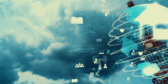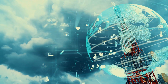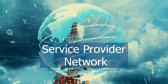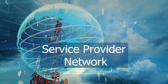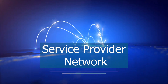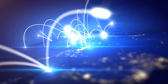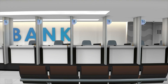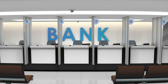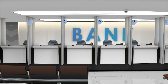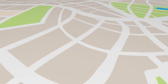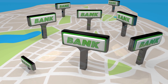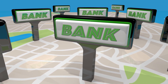An internet provider network, on the other hand, is a very large network. It's also called a service provider network. In addition to providing internet, a service provider will offer services to connect their different customers together. For example, consider that bank again with offices all around the country — they will typically pay a service provider to provide links or network connectivity between all their branches.